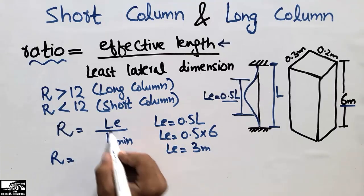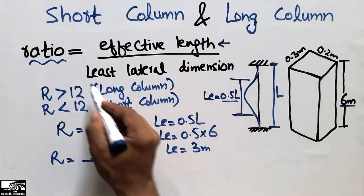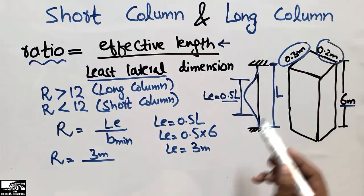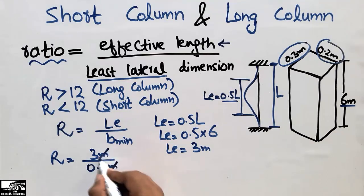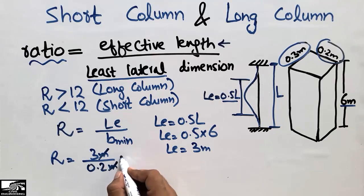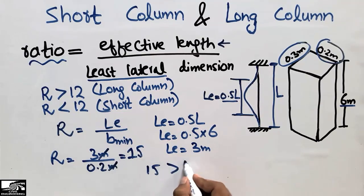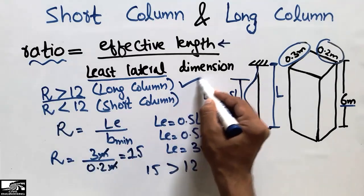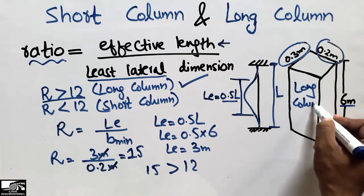Now we calculate the ratio: effective length L_E = 3 meters, and the least lateral dimension is the minimum of 0.3 m and 0.2 m, which is 0.2 meters. So the ratio = 3 ÷ 0.2 = 15. Since 15 is greater than 12, this column is classified as a long column according to the Indian Standard.